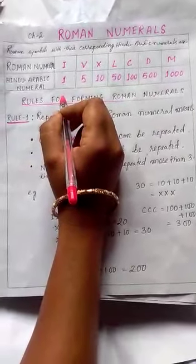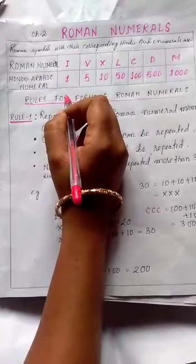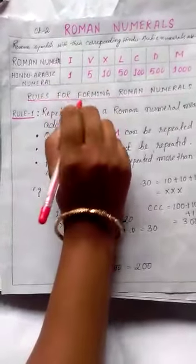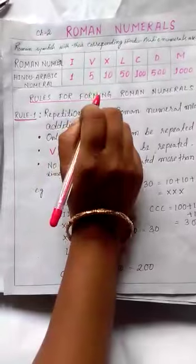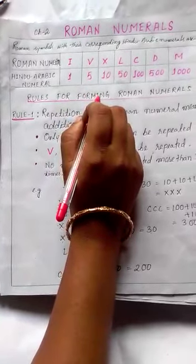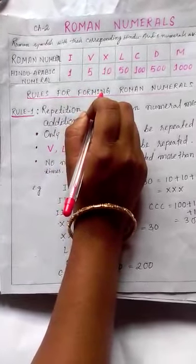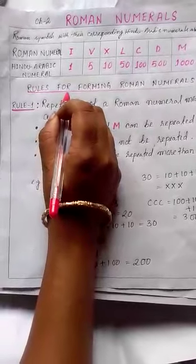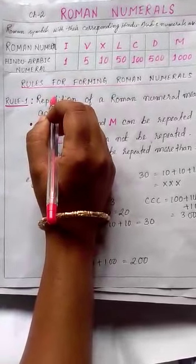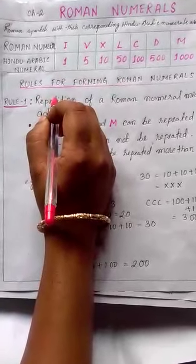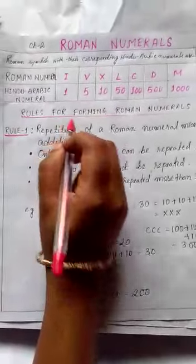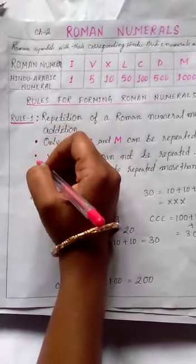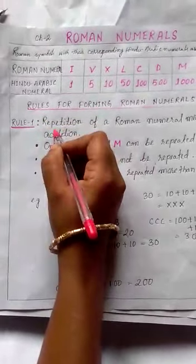This system does not have any symbol for zero, and it also does not have a place value system. But there are some rules we can follow to form Roman numerals. We'll discuss the rules one by one.